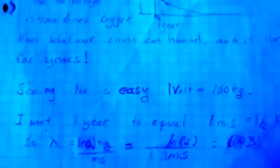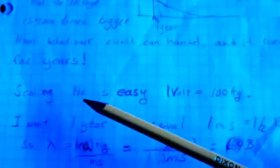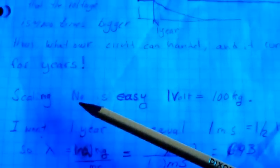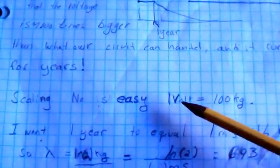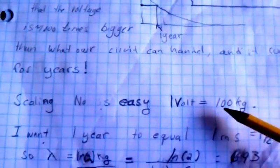In order to implement this in op amp circuits, we have to scale NO to our voltage range. This is easily done by having one volt equal to 100 kilograms.